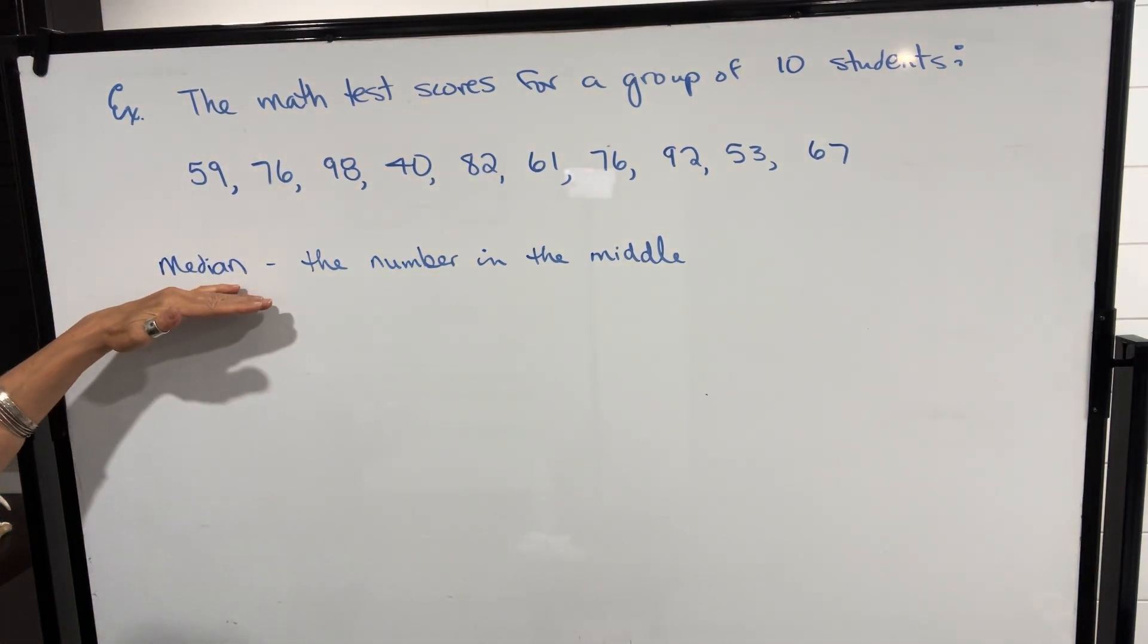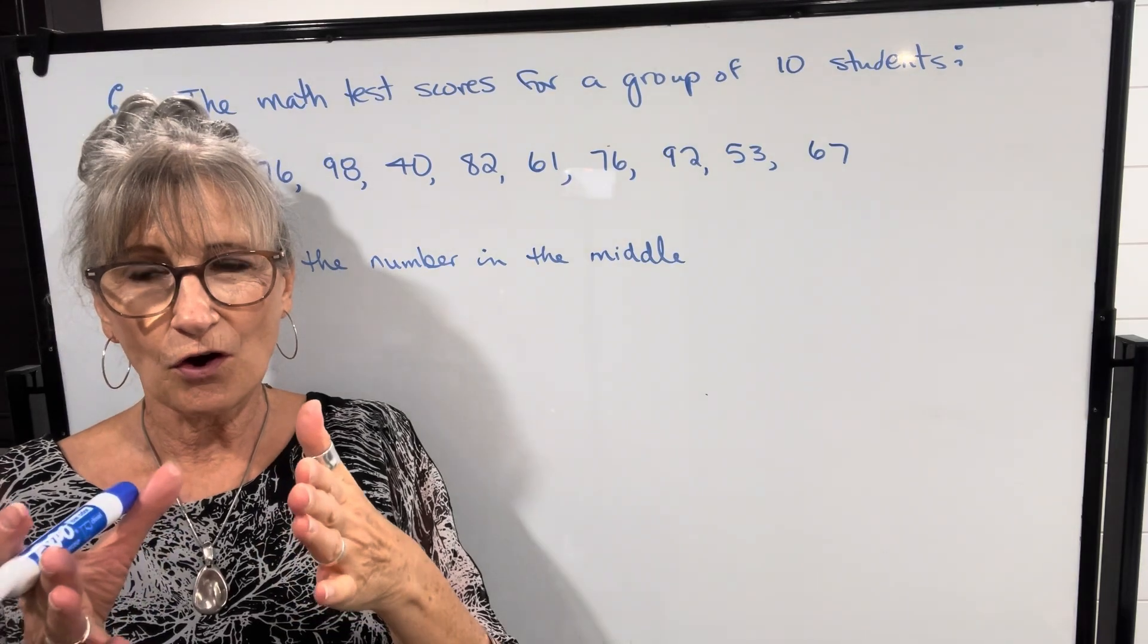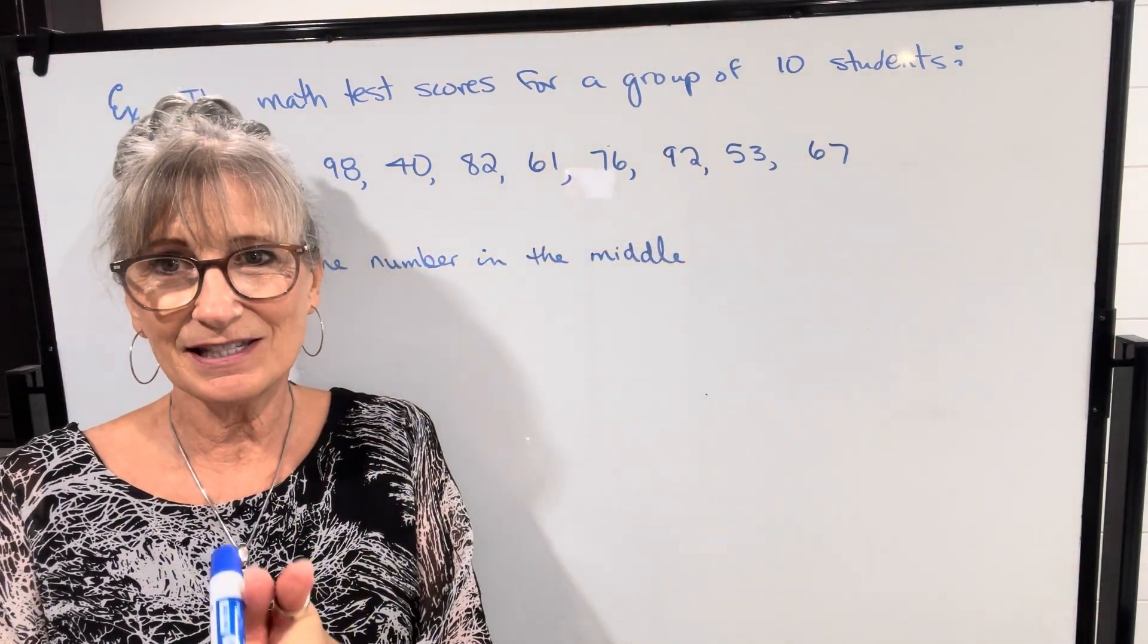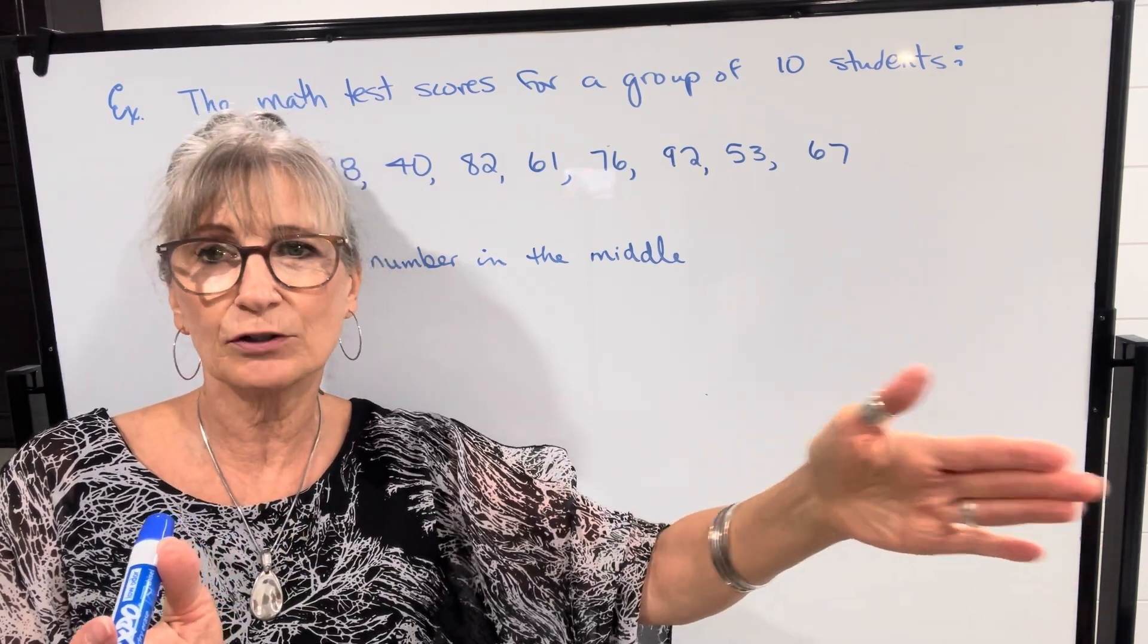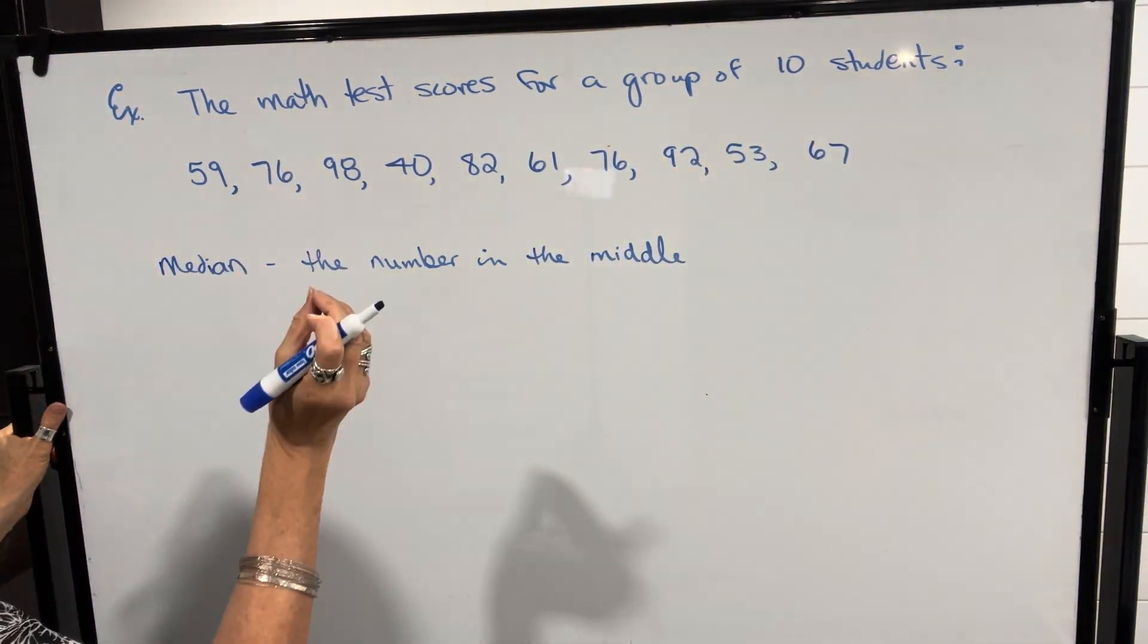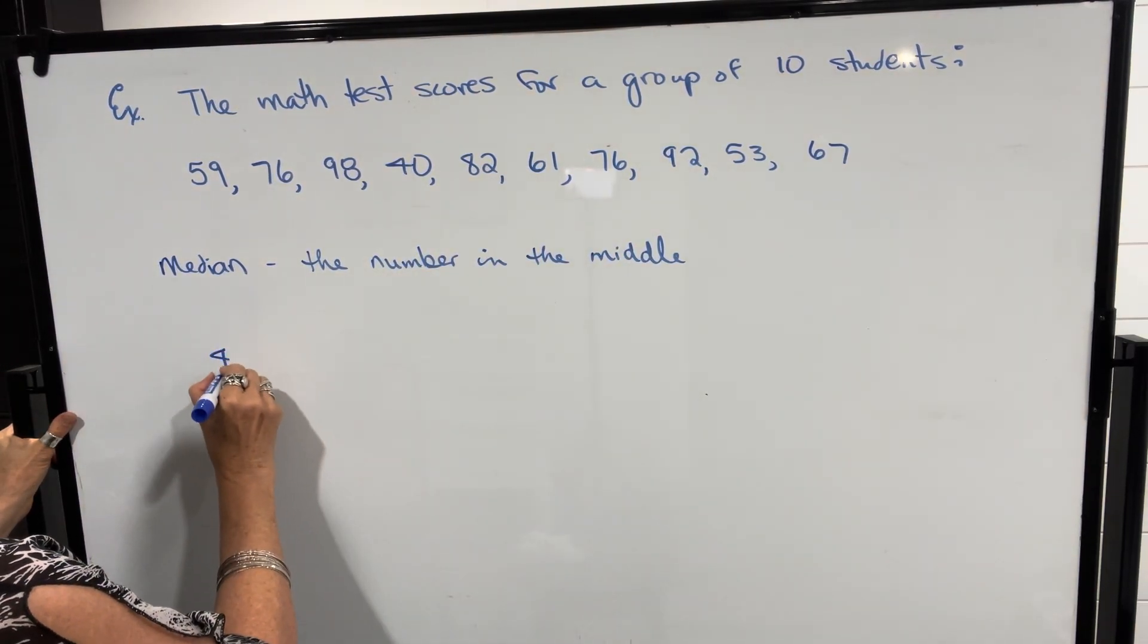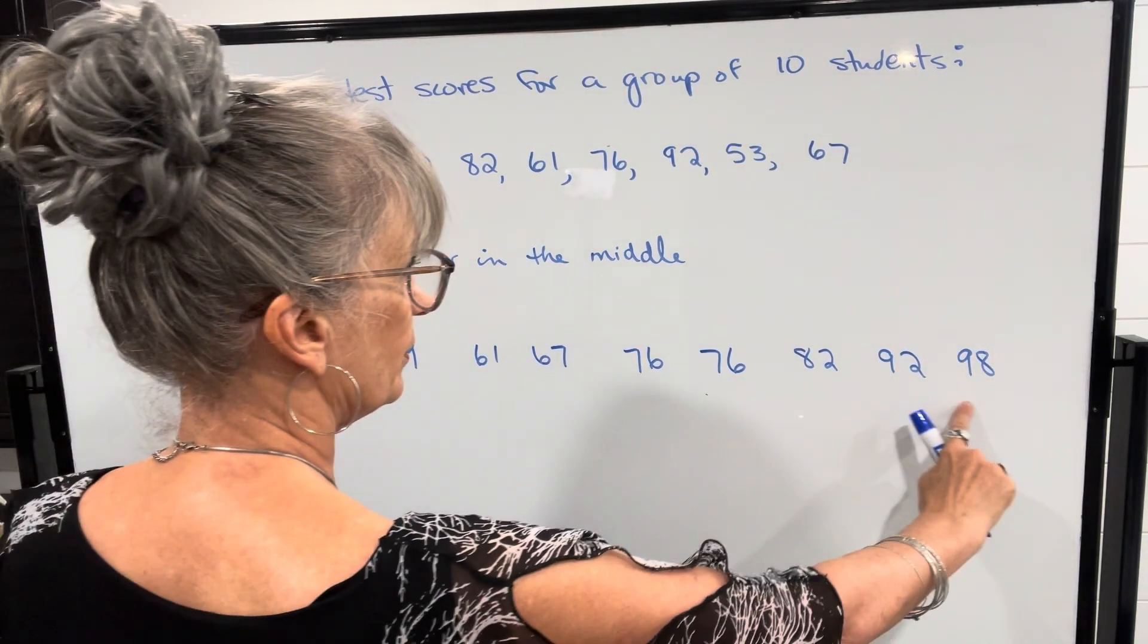Okay, the next measure of central tendency is median, and that refers to the number in the middle. When you have an odd number of test scores, it's going to be easy to see what the middle one is once you arrange those numbers in increasing order. However, when it's an even number, it's a little bit trickier. But what we're going to do in either case is arrange these test scores starting from the lowest and going to the highest.